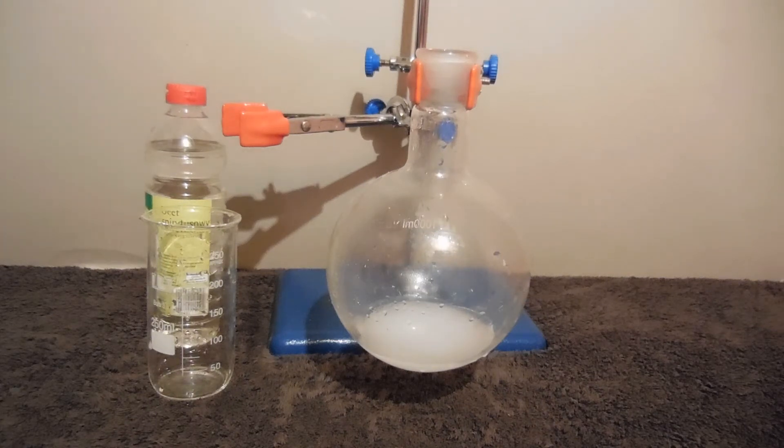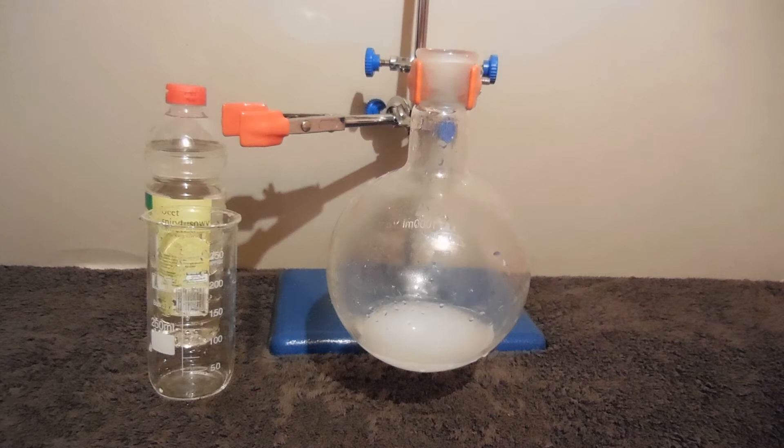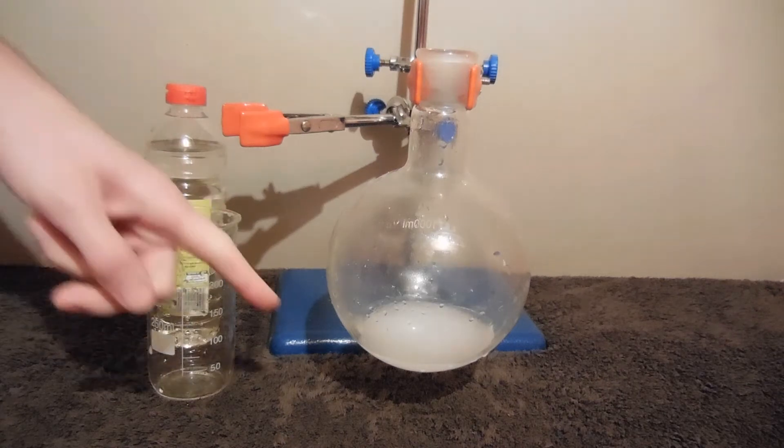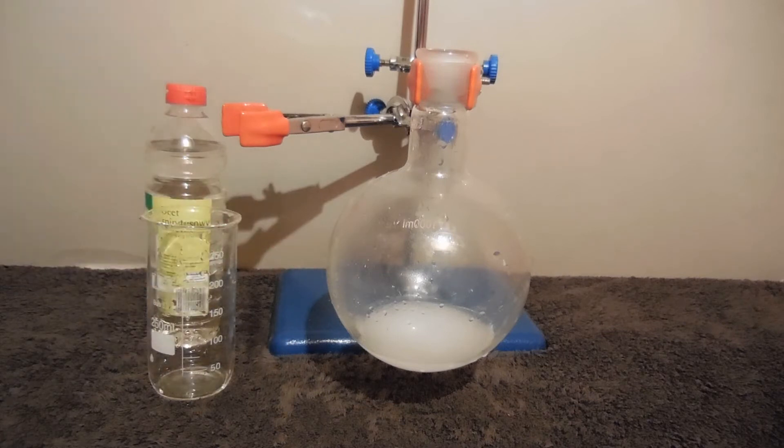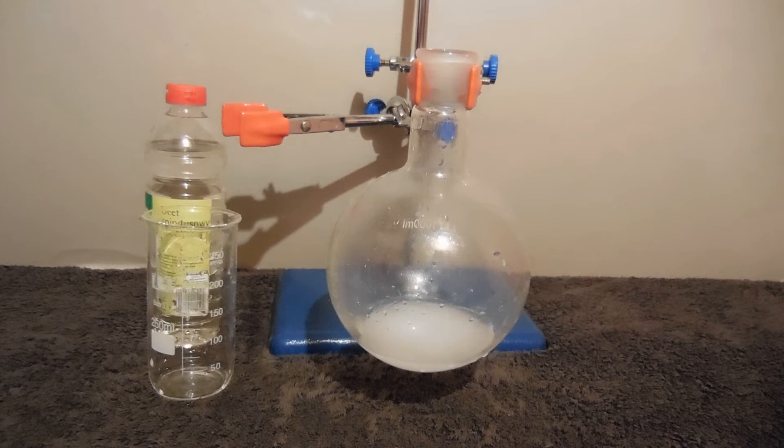Hello. In this experiment I will show you how to make zinc acetate. In this round bottom flask we have zinc hydroxide made yesterday using electrolysis of water with zinc electrodes, like I showed in a previous video.